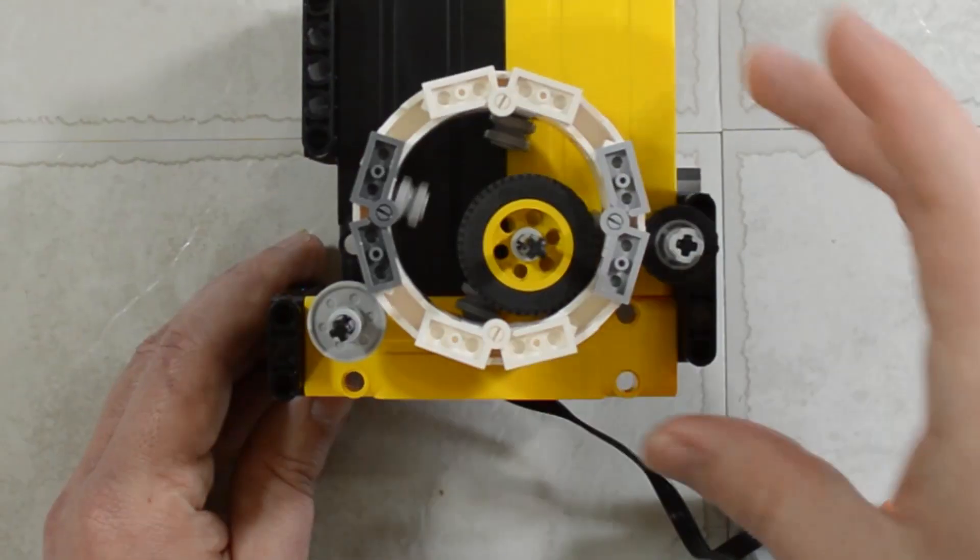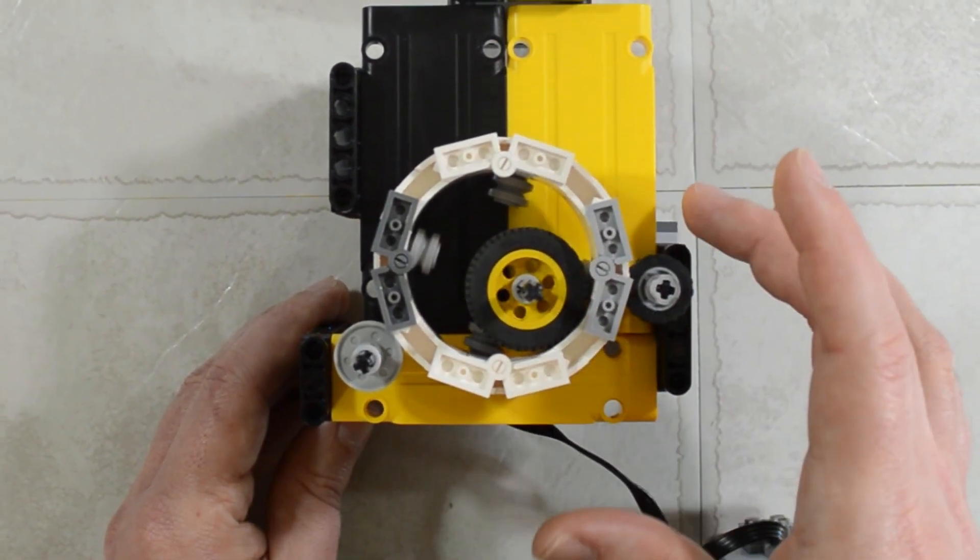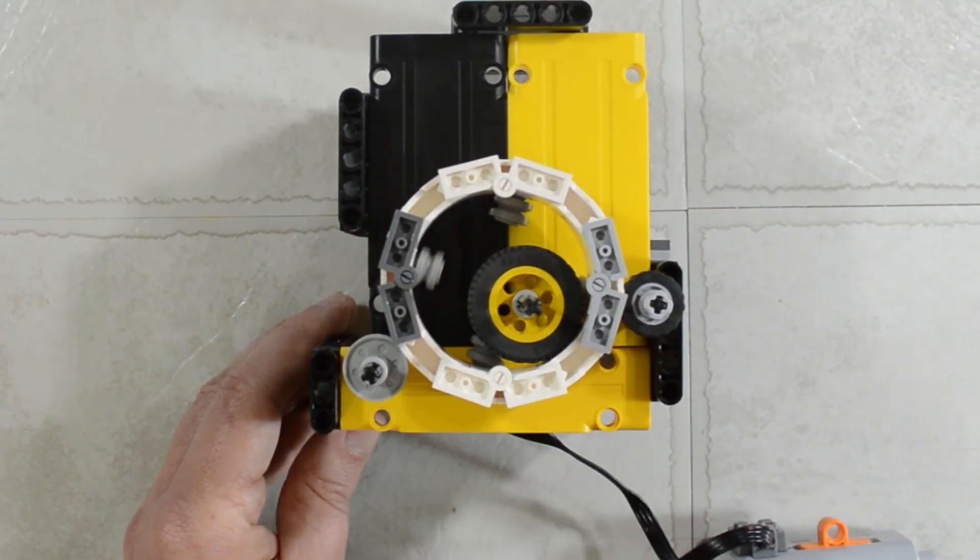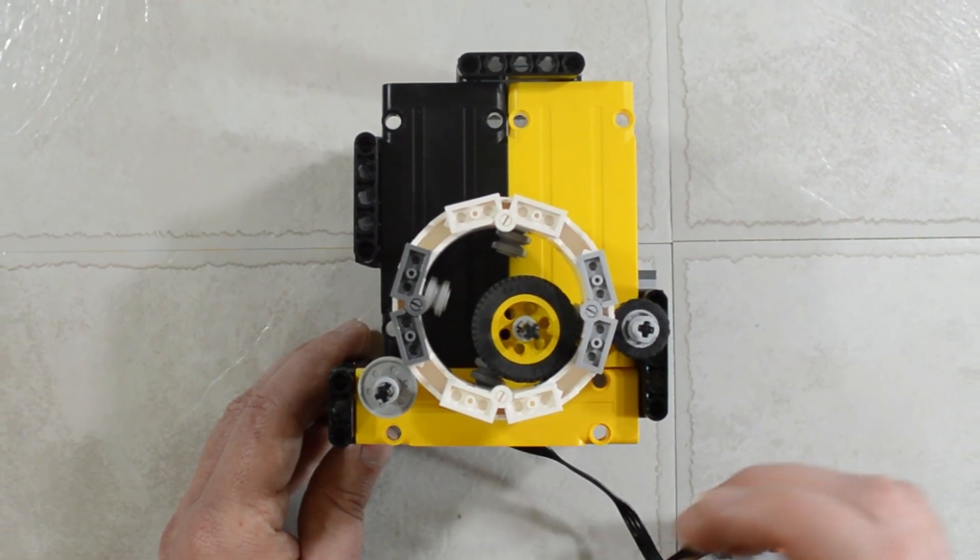Lastly, we just have some Technic panels for our bearings to roll on so that everything remains nice and frictionless. The less friction we have in this design, the better.